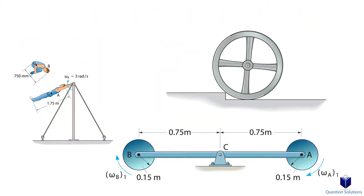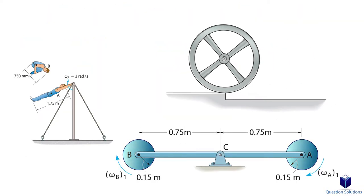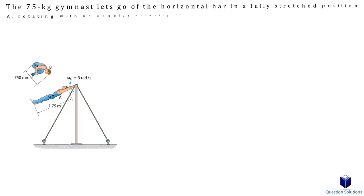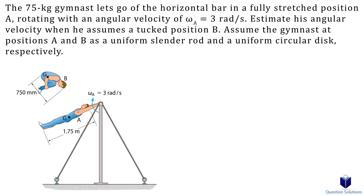Without further ado, let's get started with our first question. In this problem, we have a gymnast who lets go of the bar fully stretched, and we need to figure out his angular velocity when he is in a tucked position. To solve this problem, we can use the conservation of angular momentum. First, we need to find the mass moment of inertia for both positions.